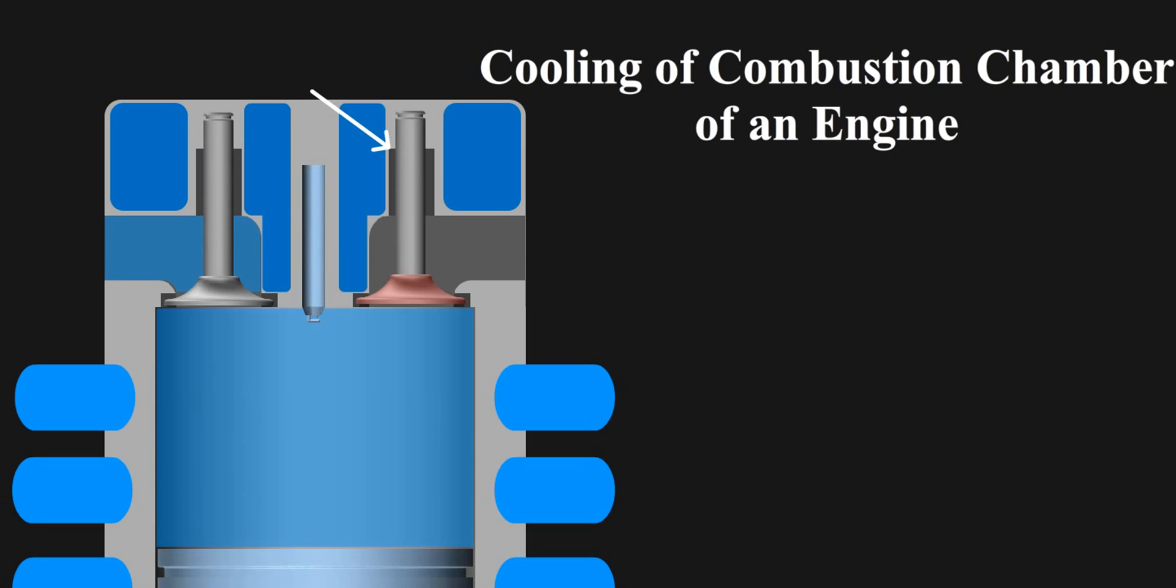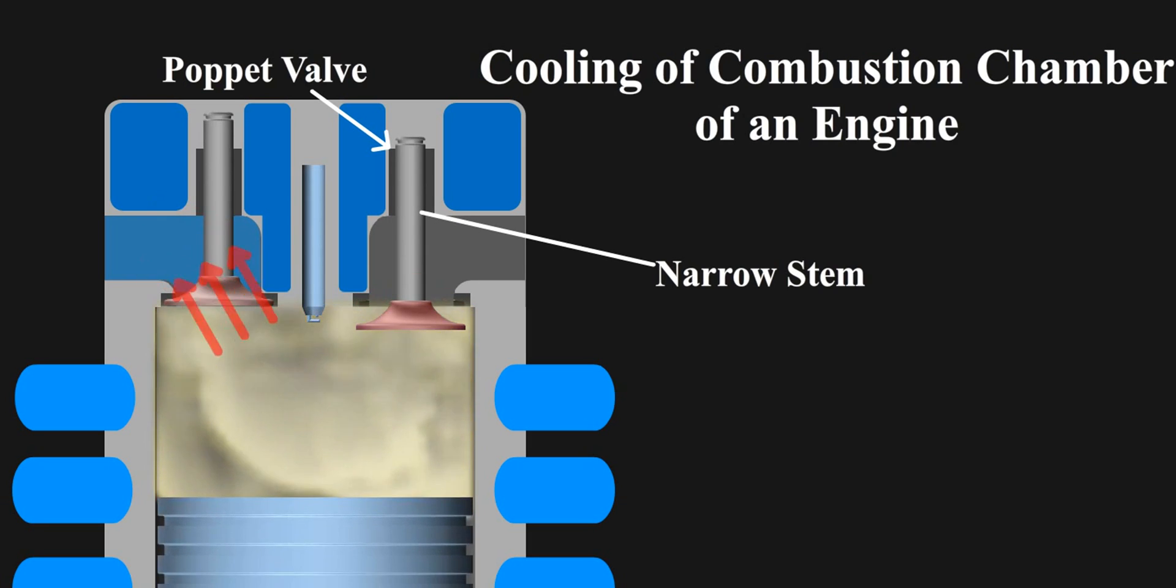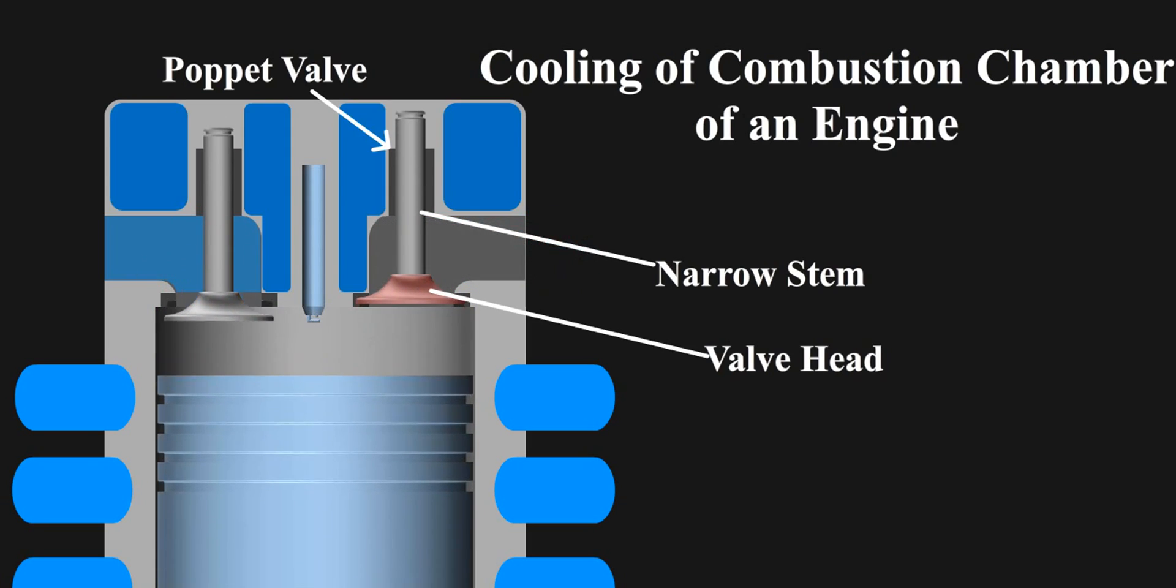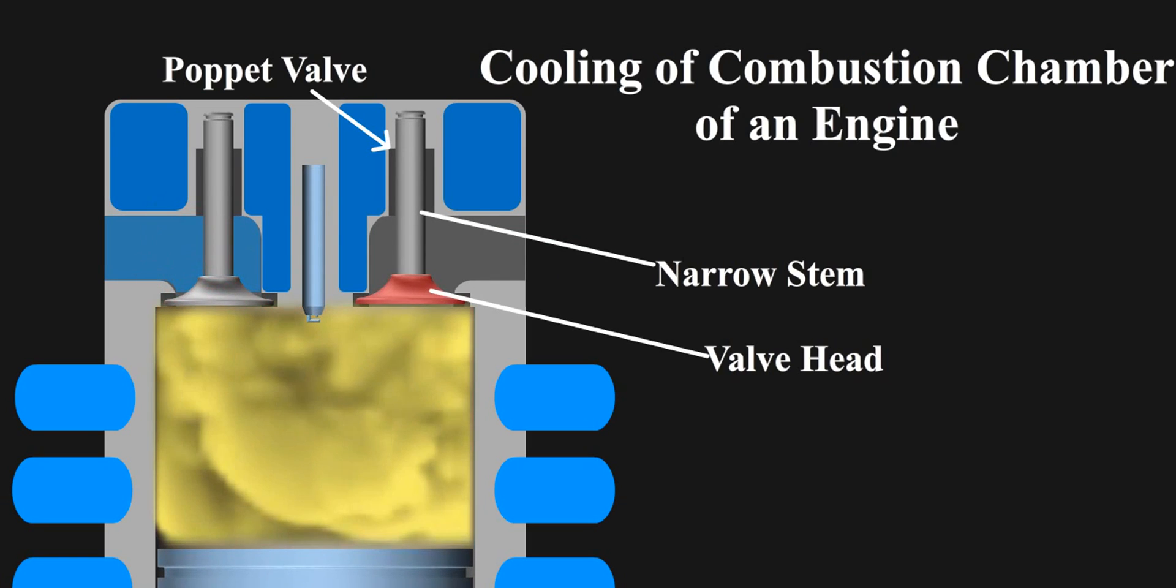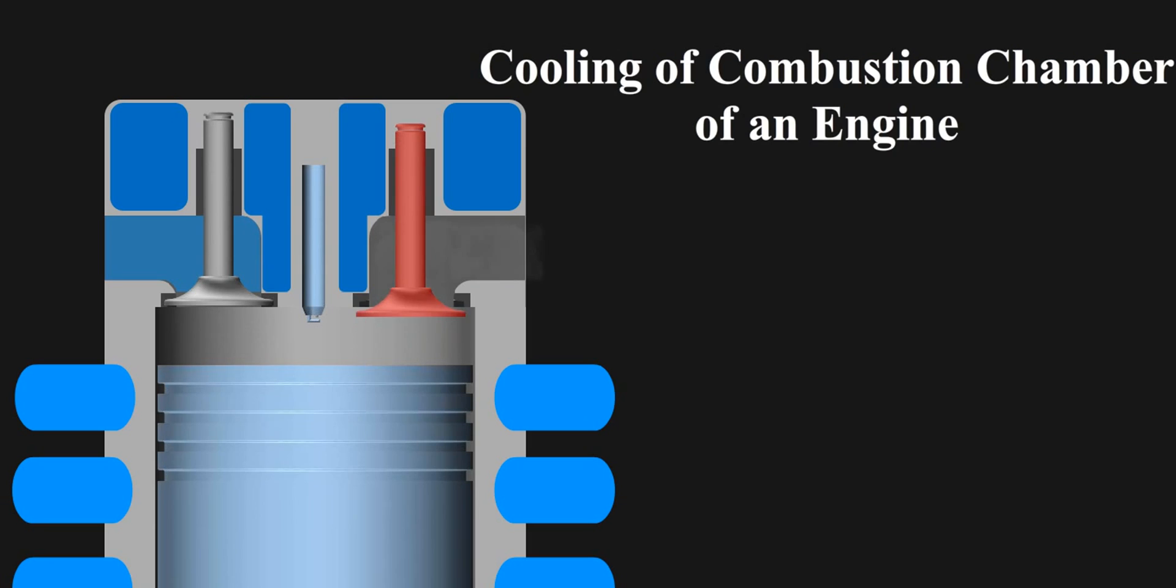Generalized valve construction used in engine is poppet valves. It has narrow stem so that it won't obstruct much airflow. The head of the valve faces the most heat from combustion and hence gets heated up. Also the exhaust air is hot so valve also gets heated from here. To dissipate all this gathered heat it has only two surfaces.